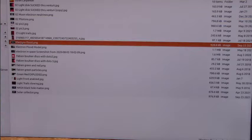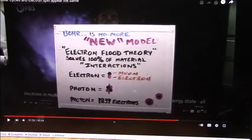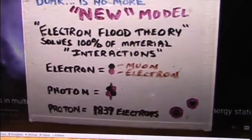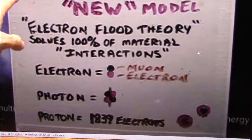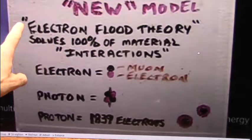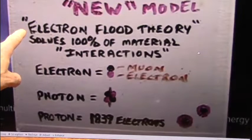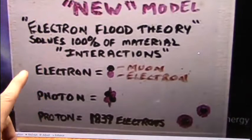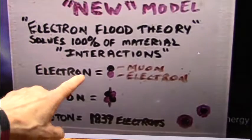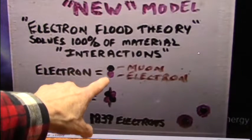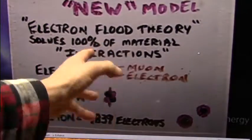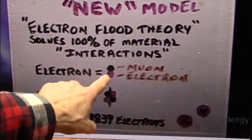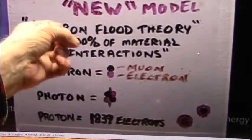This is the electron flood theory right there. That's all it is. It's the whole thing right there in one shooting match. Bohr is no more. This is the new model. Electron flood theory solves every single interaction. You point one interaction to me, I can solve it. Because the muon and the electron are tied together, electron neutrinos.